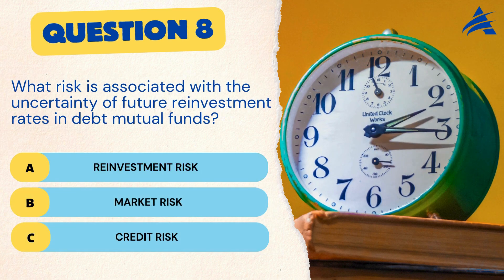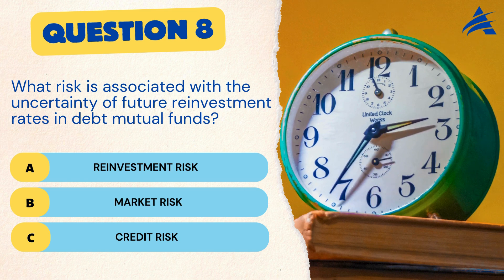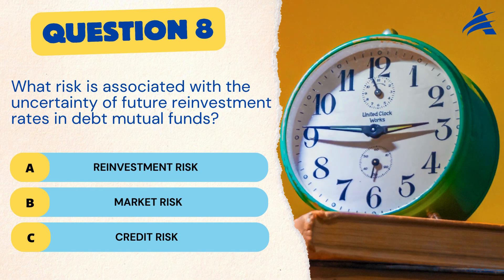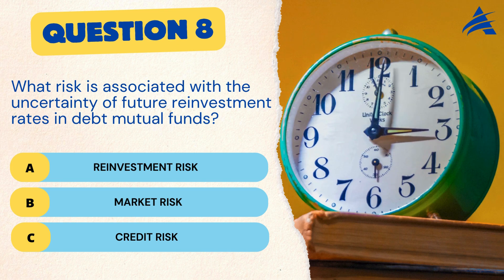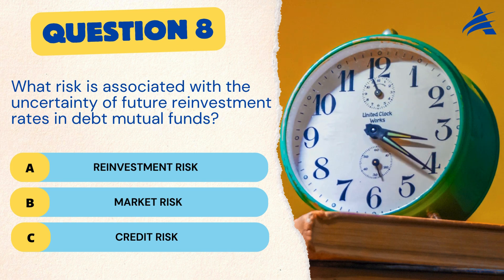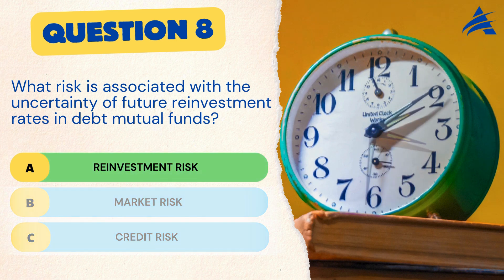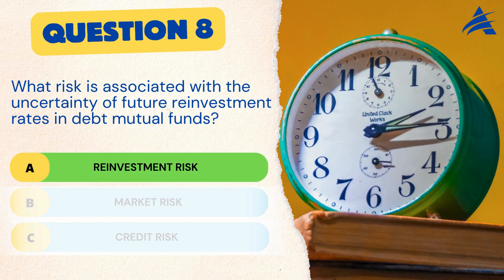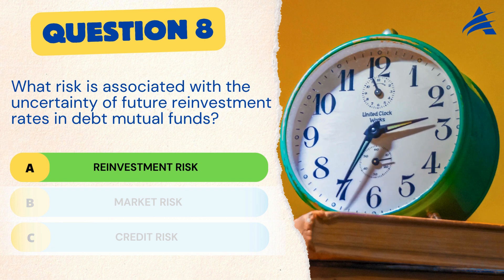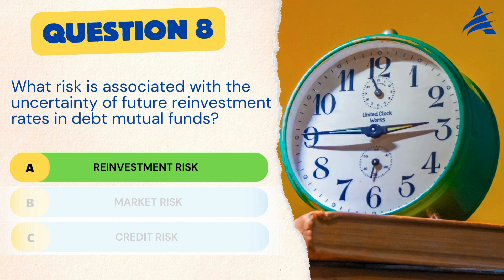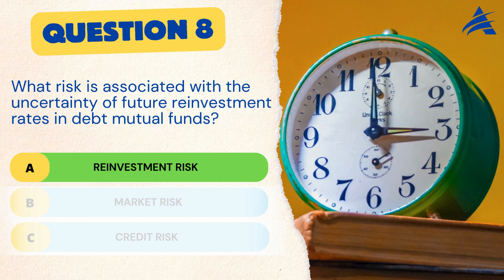Question 8. What risk is associated with the uncertainty of future reinvestment rates in debt mutual funds? A. Reinvestment risk. B. Market risk. C. Credit risk. The correct answer is A. Reinvestment risk. Reinvestment risk highlights the importance of assessing the potential impact of changing interest rates on the future returns of your investments.